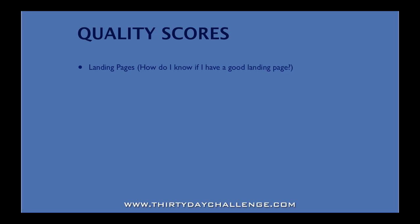When it comes to landing pages, the question I've seen a couple of times is: how do I know if I have a good landing page from a quality score perspective? It's a pretty simple answer. If your site is already ranking well naturally for a search term such as 'children's sleeping bags,' then when you actually do AdWords for the term 'children's sleeping bags,' you're going to have a good landing page quality score. Because the algorithm Google uses to rank your site for a particular search phrase is a very similar algorithm to how they determine landing page quality. It's all about giving the user the best experience, whether they click on AdWords or natural rankings.